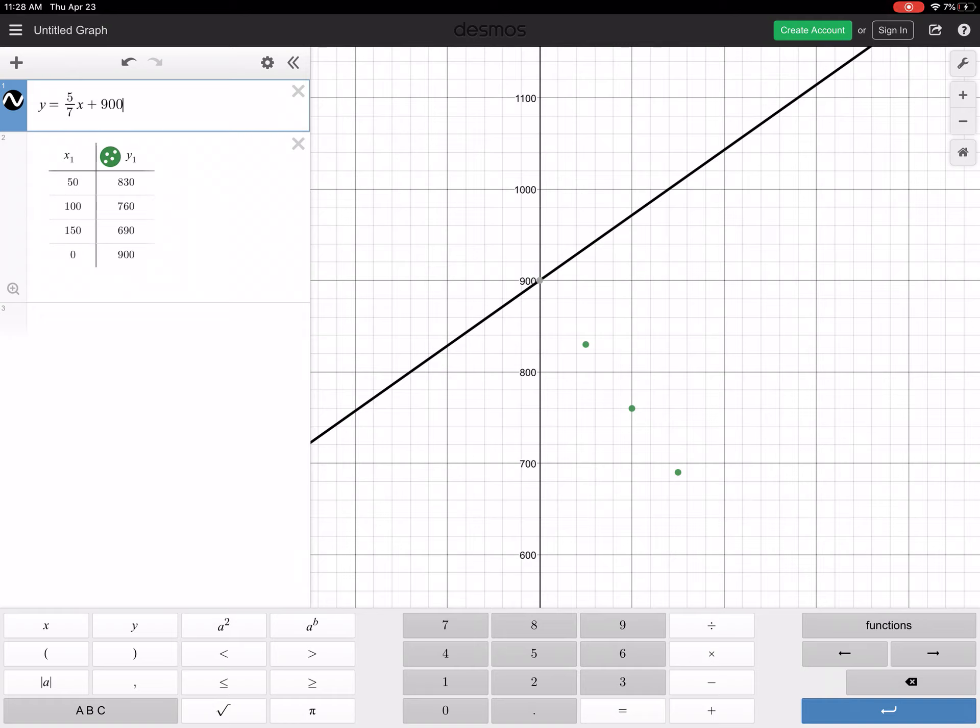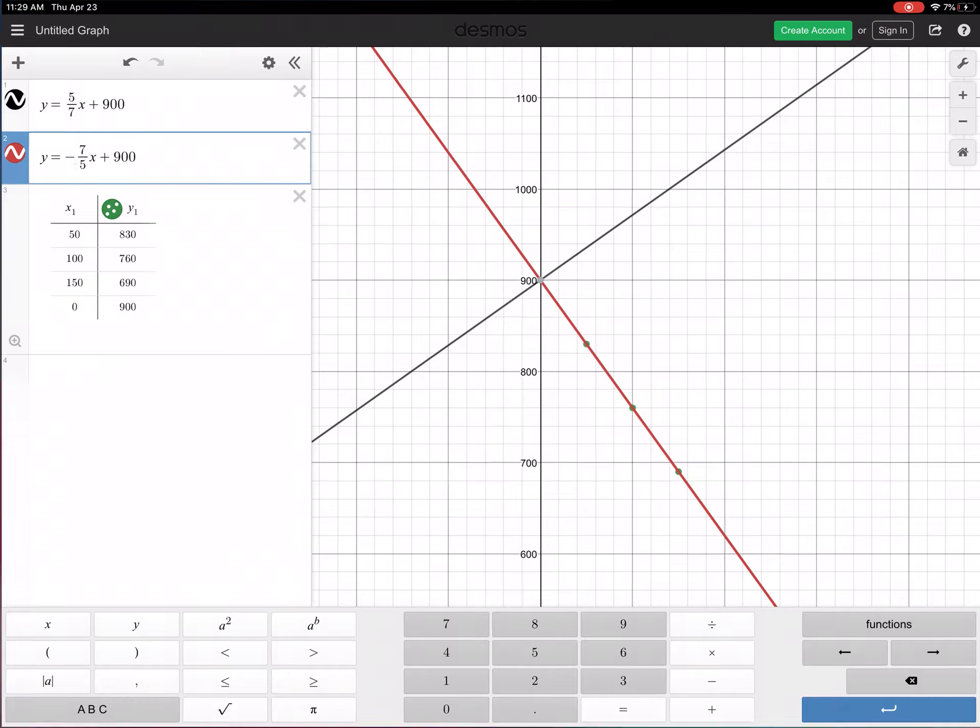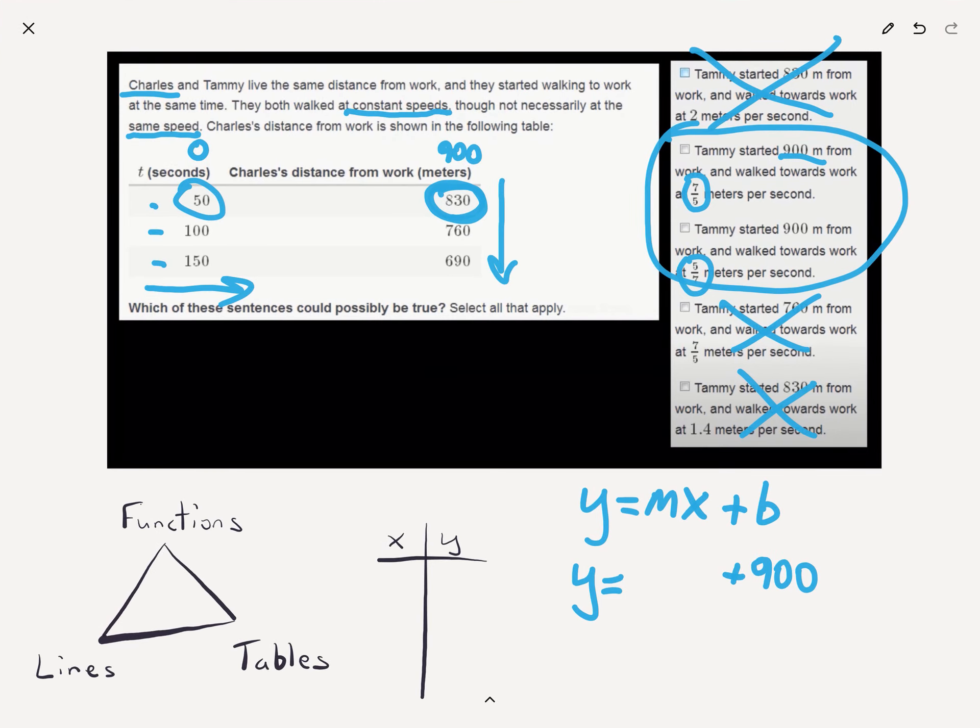Oh, no, I don't think so. All right, let's add a second expression and try out the other one. y equals 7 fifths x plus 900. No, no, that doesn't seem to be right either. These both have a positive slope, and we need something with a negative slope. Therefore, we need to add a negative sign, and the answer is y equals negative 7 fifths x plus 900. And if you want to think about that negative sign in terms of the word problem, they get closer and closer to work, or the distance from work decreases as time increases, okay? It's an inverse relationship.